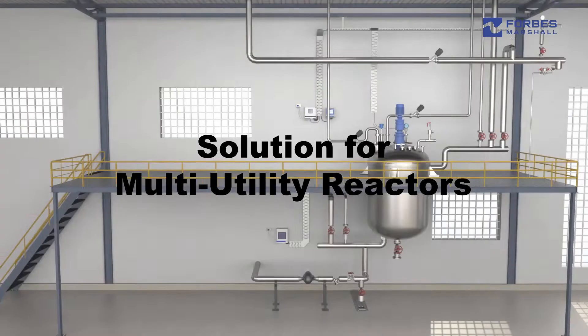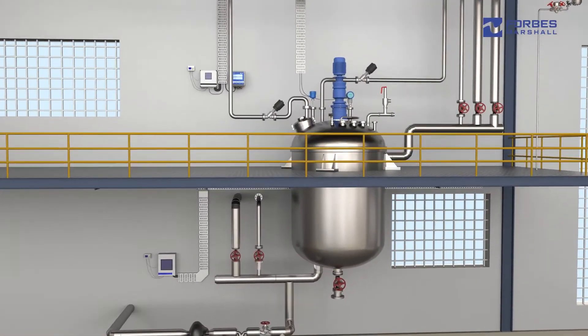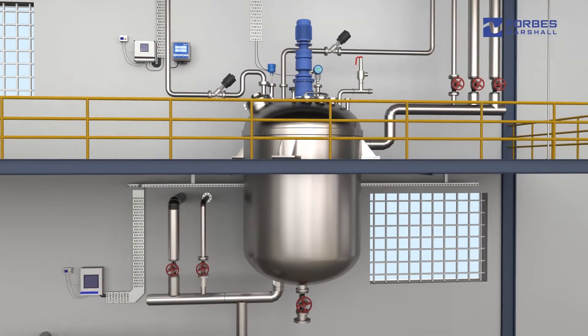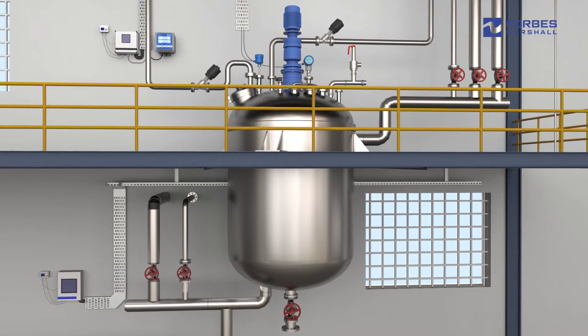Most primary processing is done in reactors where reactions of different products are carried out in a controlled environment. Achieving consistent product quality for each batch is critical.